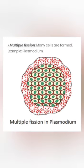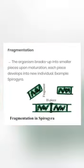Now let us know about multiple fission. When many cells are formed at a time from a single cell, that type of fission is known as multiple fission. This is seen in Plasmodium. Here, a single cell develops into multiple cells. In the picture, we can see many cells being formed from a single cell.